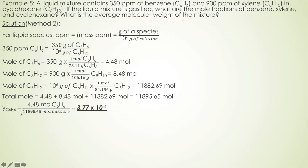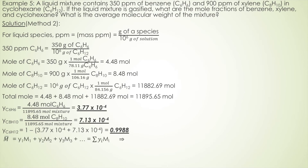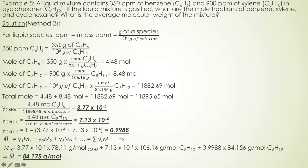Mole fraction is calculated as moles of species divided by total moles. For benzene: 4.48 mol divided by 11,895.65 mol gives 3.77 × 10⁻⁴. For xylene: 8.48 mol divided by 11,895.65 mol gives 7.13 × 10⁻⁴. Mole fraction of cyclohexane is 1 minus the sum of the other two, giving 0.9988. The average molecular weight using the mole fraction equation — sum of mole fraction times molecular weight for each species — gives 84.175 g/mol.